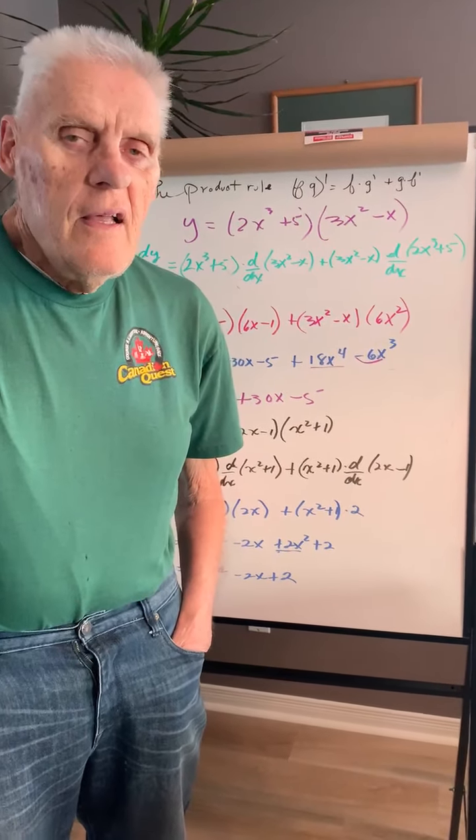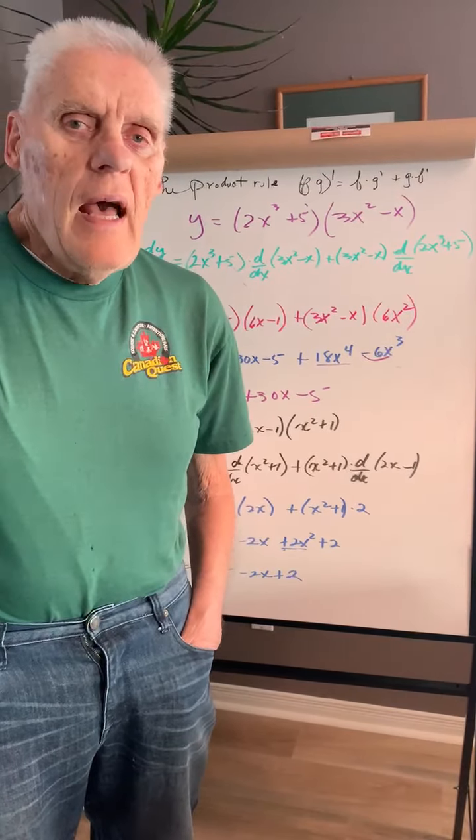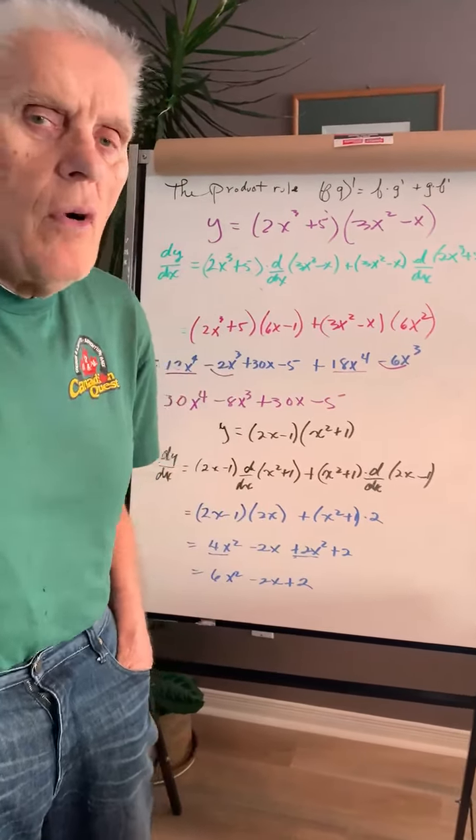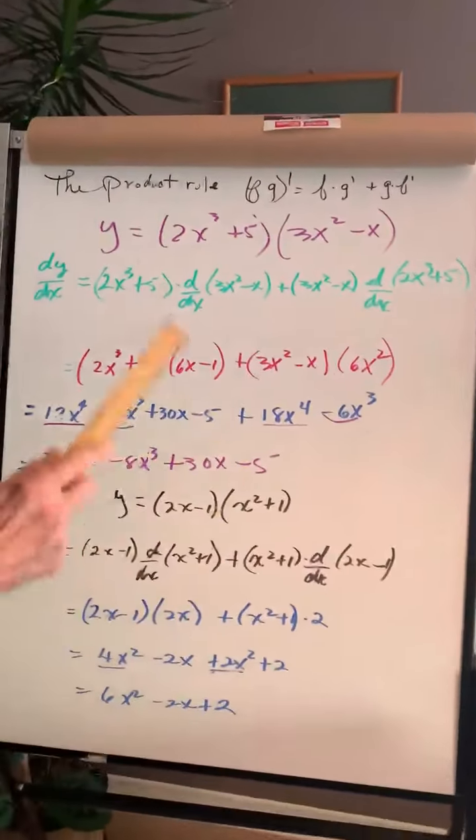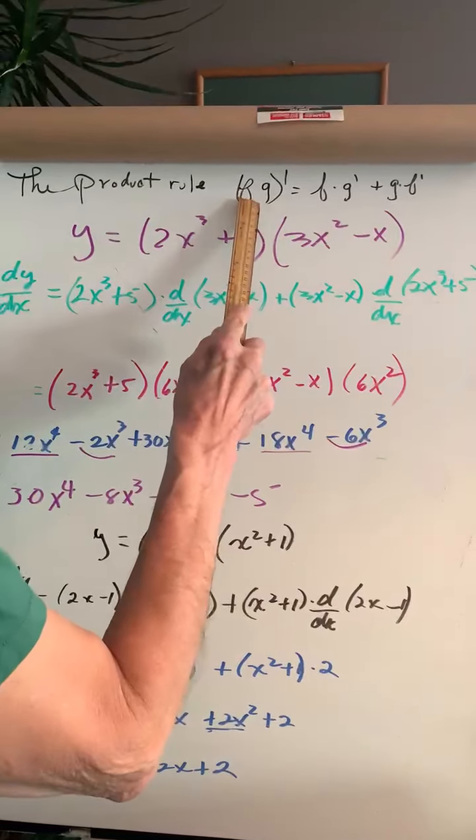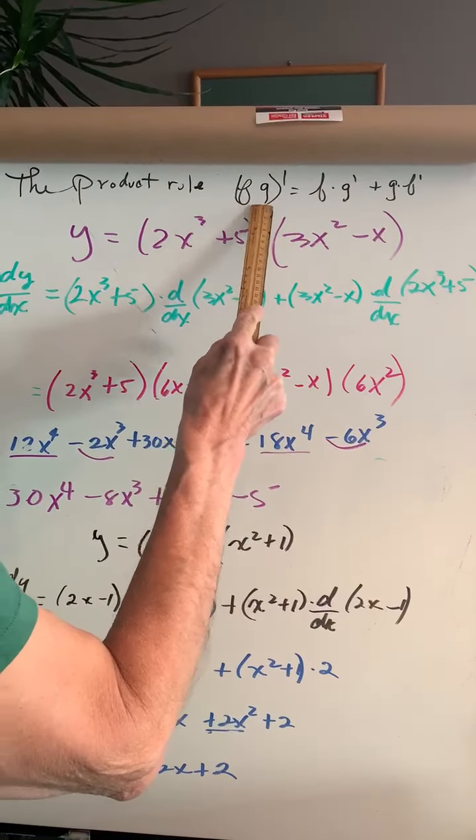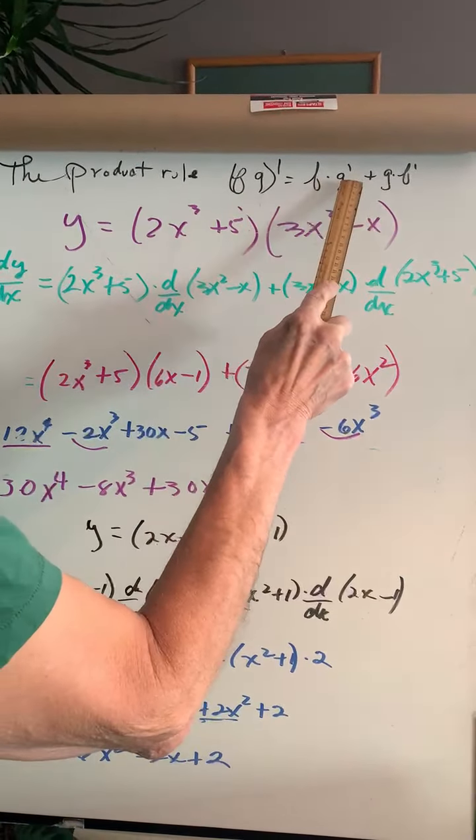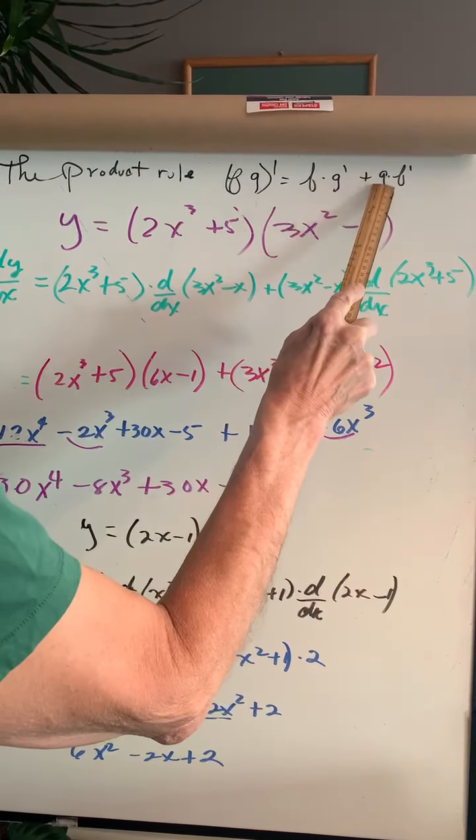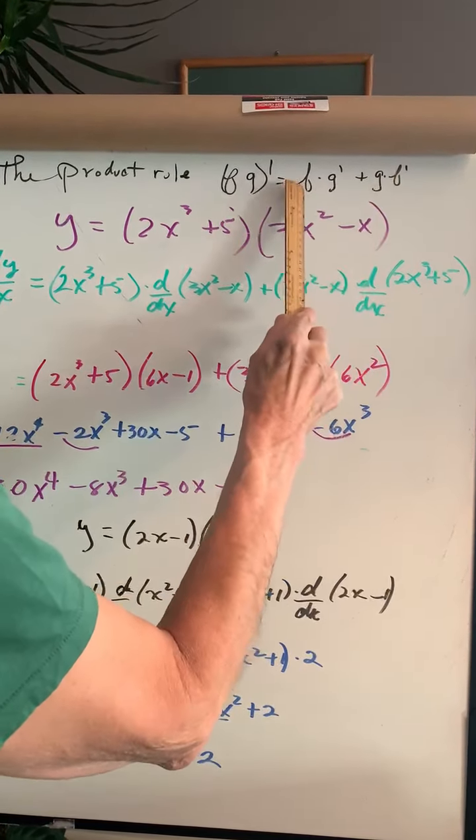Okay, we're going to do the product rule today. I need this problem to do one more rate problem. Here we have two functions that we want to play together. The derivative will be the first times the derivative of the second plus the second times the derivative of the first.